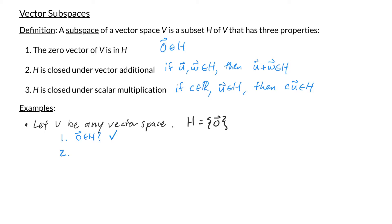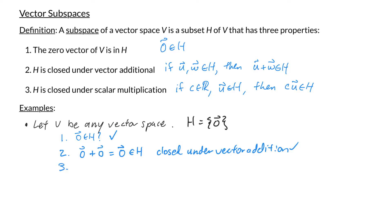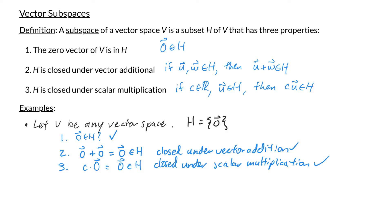Condition two: is H closed under vector addition? If I take any two elements in H, their sum must be in H. The only element in H is the zero vector, and the zero vector plus the zero vector is still the zero vector, which is in H, so it's closed under vector addition. For condition three, is H closed under scalar multiplication? Any scalar C times the zero vector gives the zero vector, which is in H, so it's closed under scalar multiplication. Since all three conditions are satisfied, we conclude that H is a subspace of V.